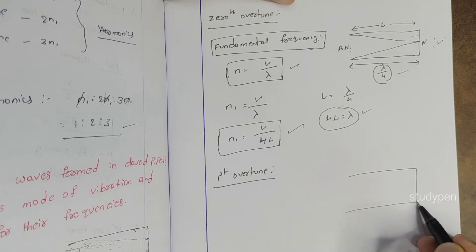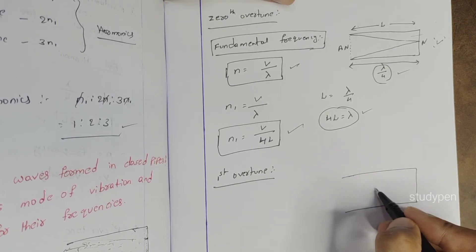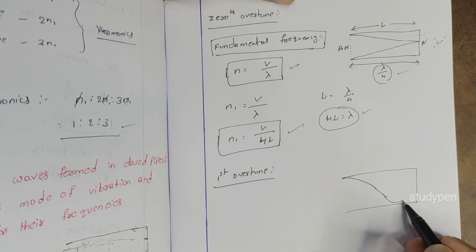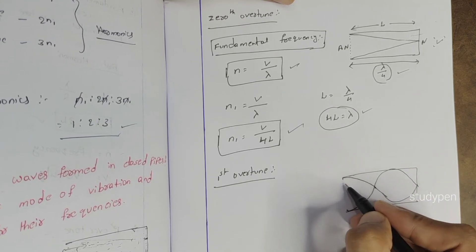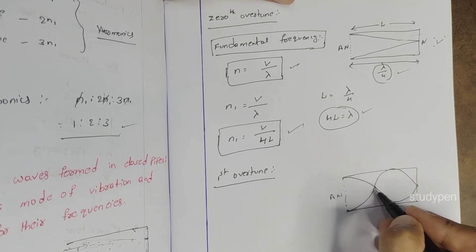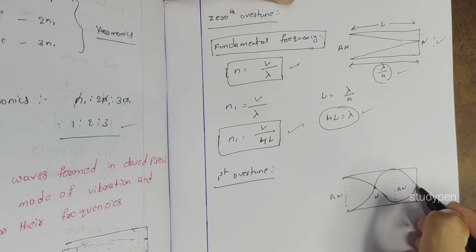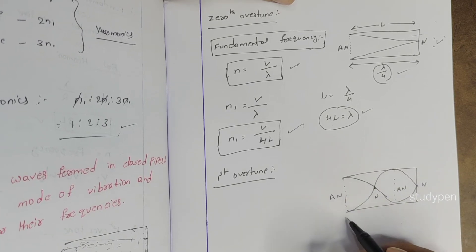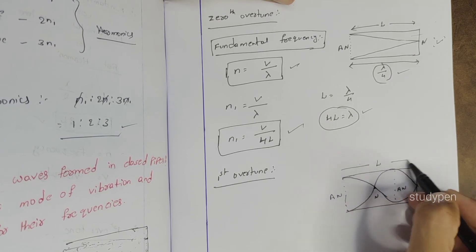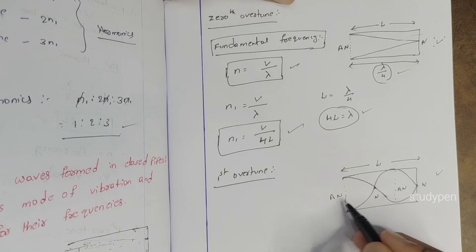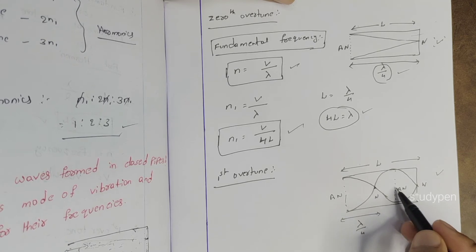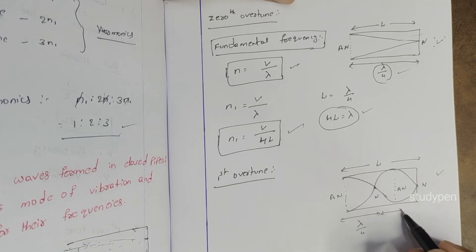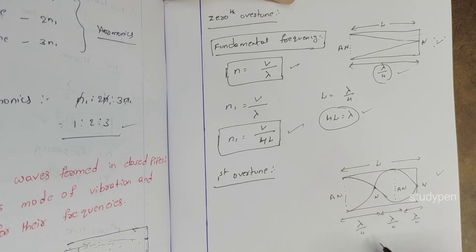In the diagram, we have maximum amplitude at the antinode at one end, and a node at the closed end. The pipe length includes one antinode-to-node distance of λ/4. So the total length equals λ/4.